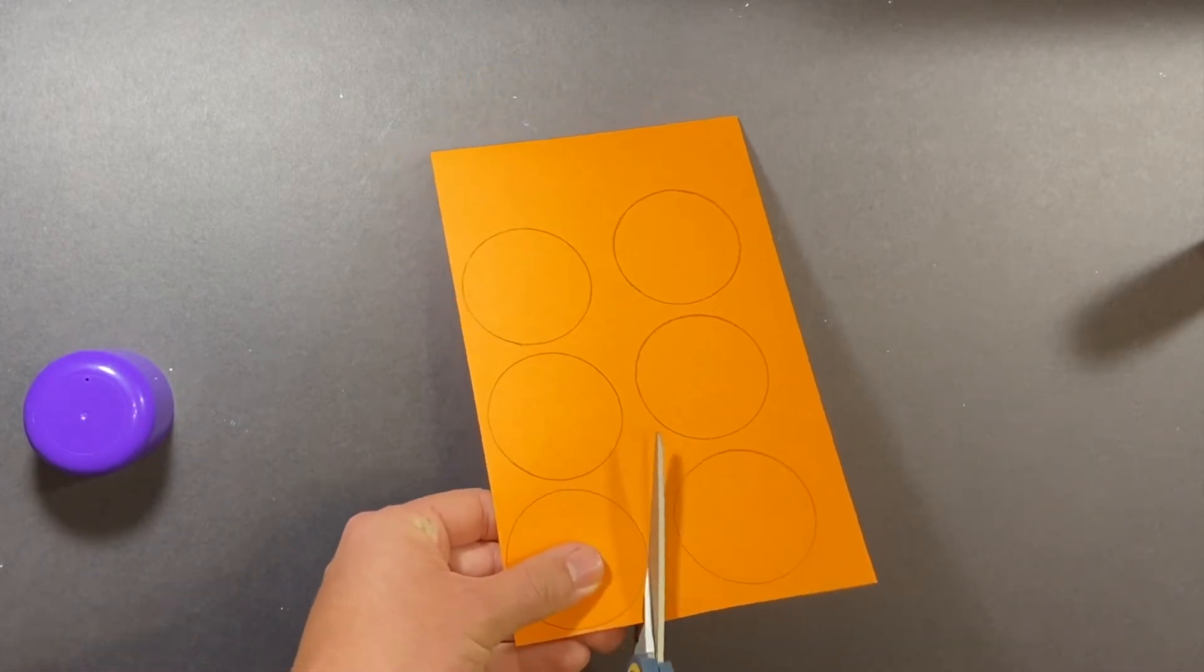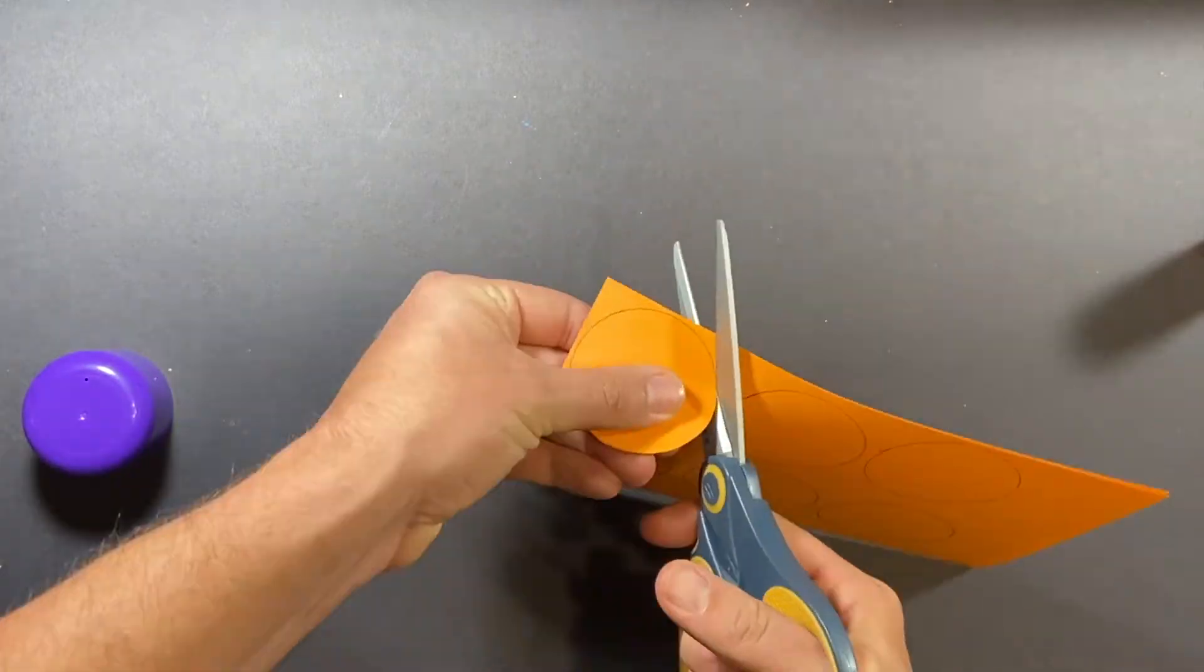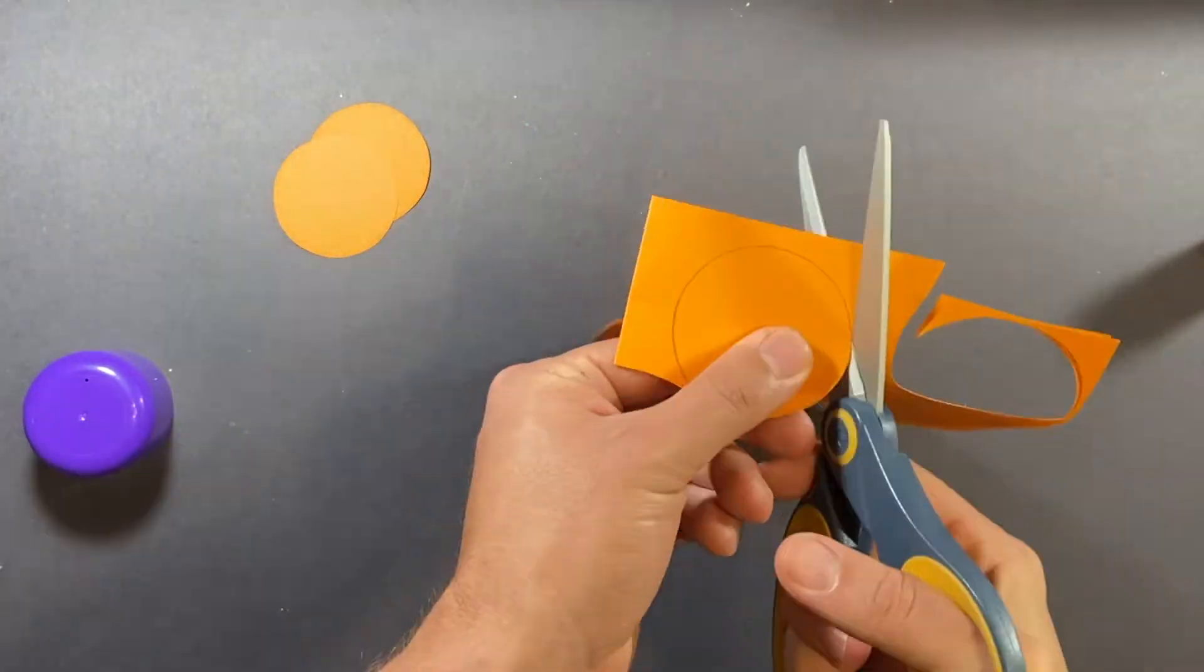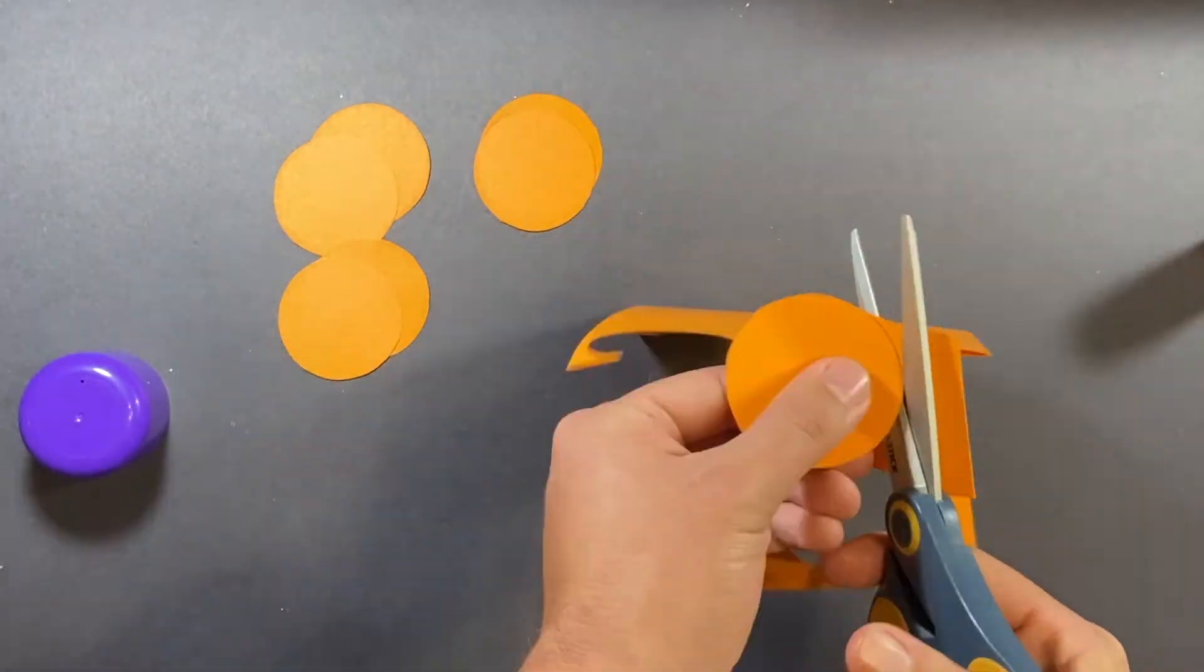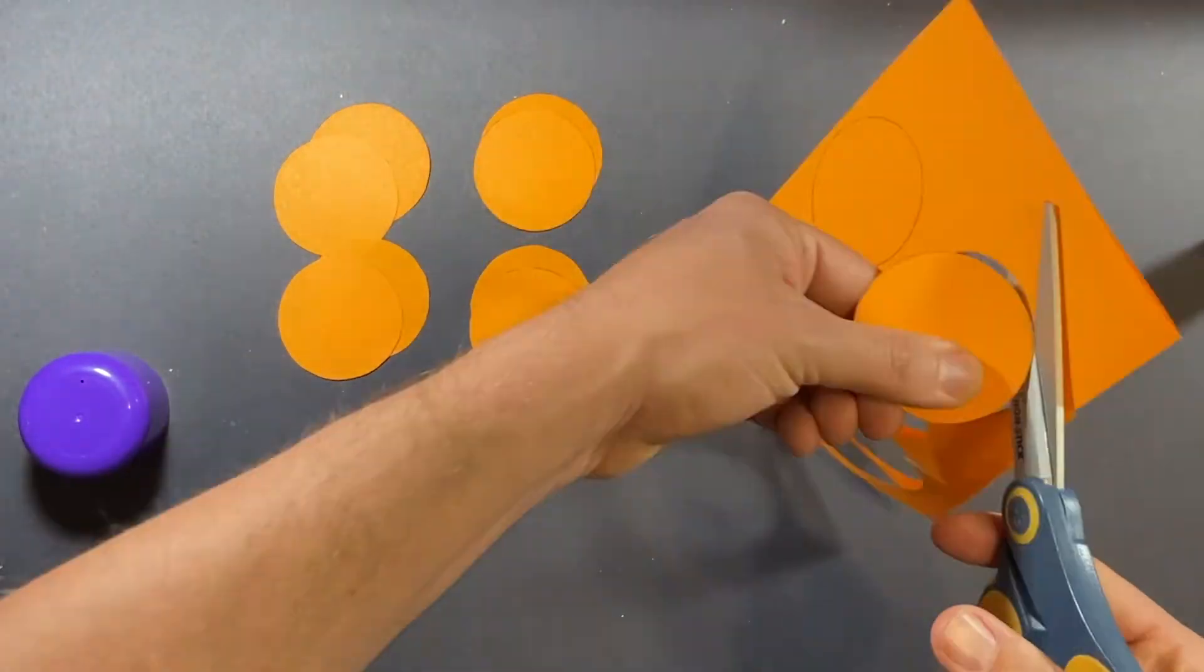Remember your craftsmanship. Remember to keep the paper folded. Cut right along the line. Does anybody know how many circles we're going to end up with once we've cut out all six on this folded sheet of paper?